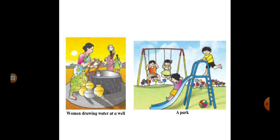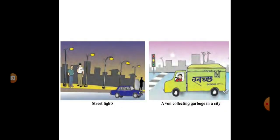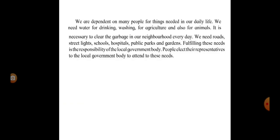In this picture, what can you see? Women drawing water at a well, a park. Here you can see street lights, a van collecting garbage in a city. We are dependent on many people for things needed in our daily life. We need water for drinking, washing, for agriculture and also for animals. It is necessary to clear the garbage in our neighborhood every day. We need roads, street lights, schools, hospitals, public parks and gardens. Fulfilling these needs is the responsibility of the local government body. People elect the representatives to the local government body to attend to these needs.